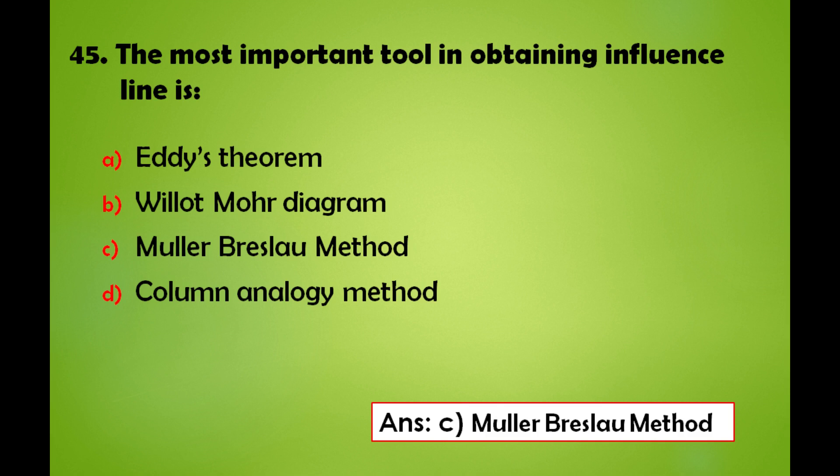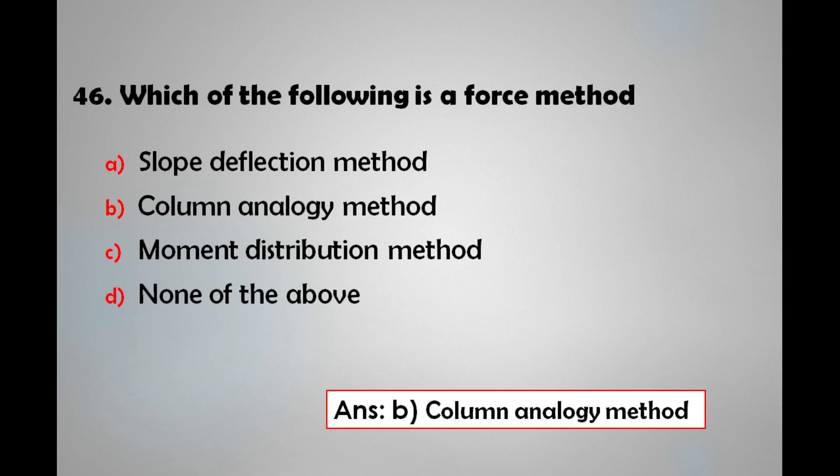The most important tool in obtaining influence lines is: a) Eddy's theorem, b) Willett-Moore theorem, c) Muller-Breslau method, d) column analogy method. The answer is: the most important tool in obtaining influence lines is the Muller-Breslau method.